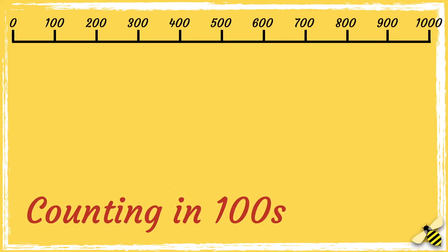Let's start by counting in 100s up to 1000. When you count in 10s, you change the 10s digit, whereas when you count in 100s, you only change the 100s digit.